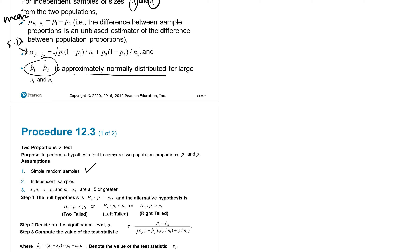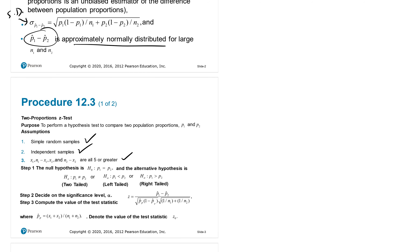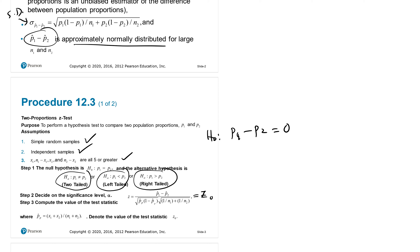To run hypothesis testing, samples should be simple random and independent, and x1, n1 minus x1, x2, and n2 minus x2 should all be greater than or equal to 5. The null hypothesis is p1 equals p2, or equivalently p1 minus p2 equals 0. The alternative hypothesis can be: not equal (two-tail), less than (left-tail), or greater than (right-tail). The test statistic z-sub-0 is p1-hat minus p2-hat divided by the square root of